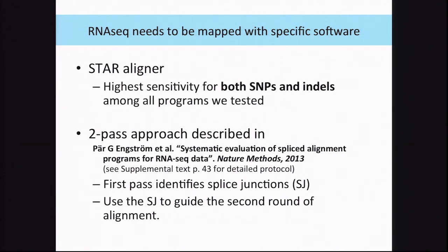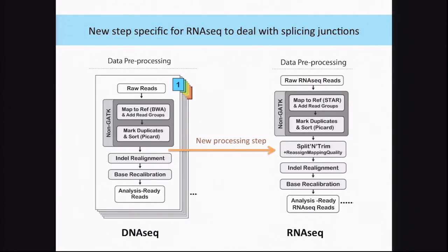Currently, the Broad pipeline — for everyone wondering what the Picard team is running as its main RNA aligner — is still the old TopHat aligner, but there is a plan to switch to a STAR two-pass aligner as the production pipeline at the Broad.